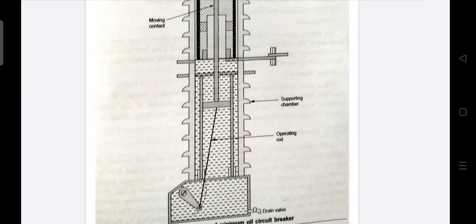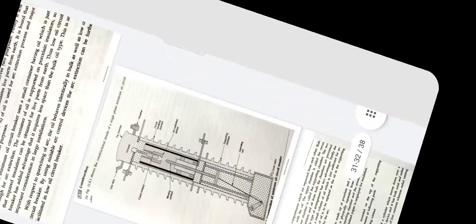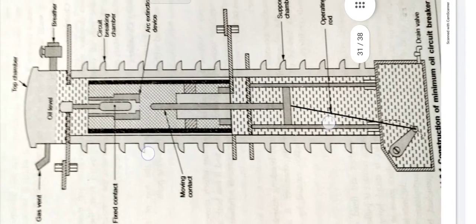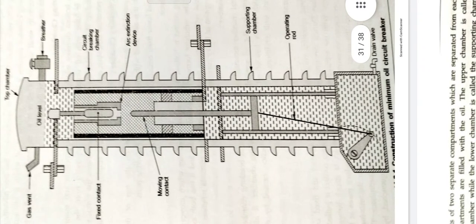Now let's see construction details of this type of circuit breaker. It consists of mainly two separate compartments which are separated from each other. Both these compartments are filled with the oil. The upper chamber is called the circuit breaking chamber while the lower chamber is called supporting chamber.